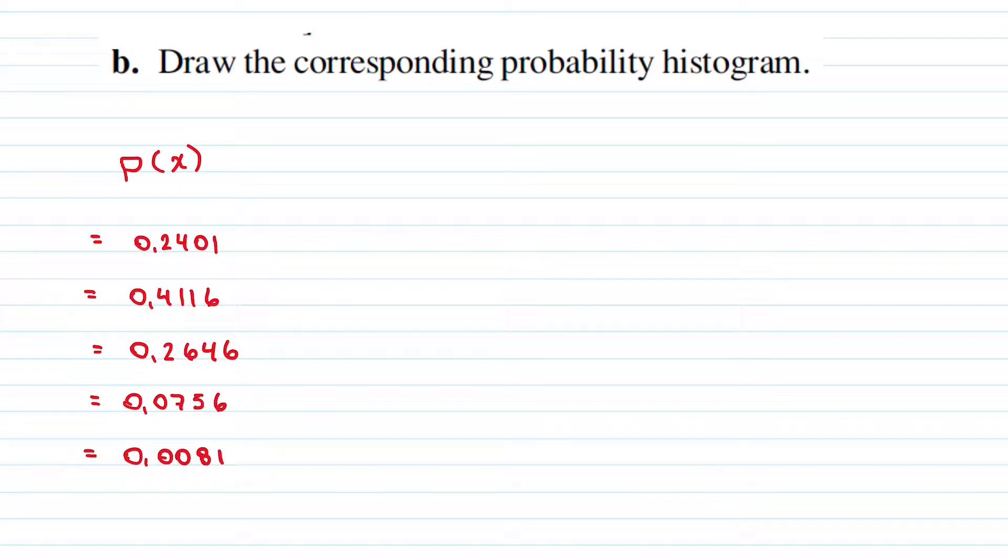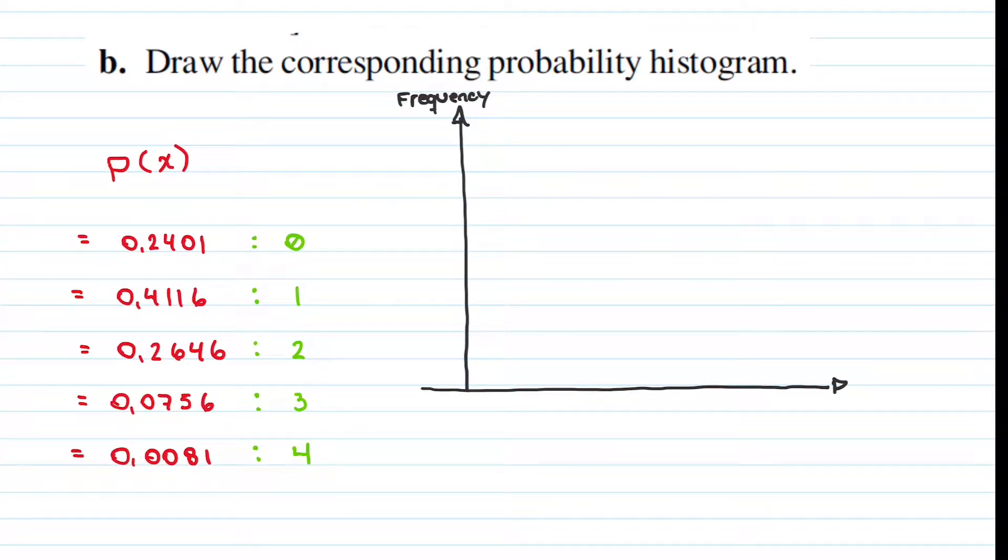Part B. Draw the corresponding probability histogram. Based on our probability distribution results, we can create our histogram, where our vertical axis is the frequency and the horizontal axis is X, or the number of houses with insurance.